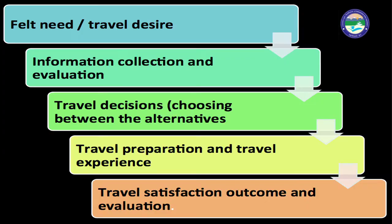This model has five different phases. The first is felt need or travel desire. The second is information collection and evaluation. The third is travel decisions — choosing between alternatives. The fourth is travel preparation and travel experience. The fifth and final phase is travel satisfaction, outcome, and evaluation.